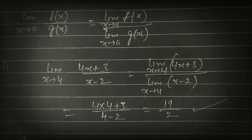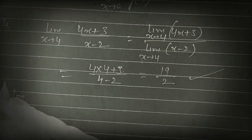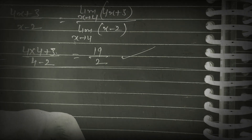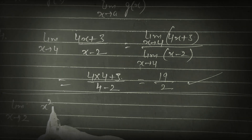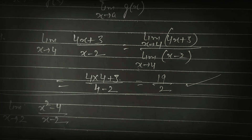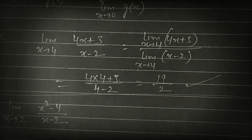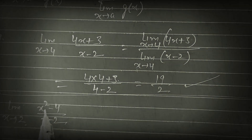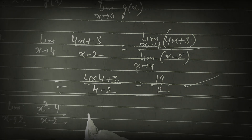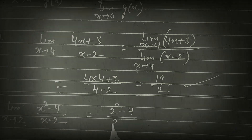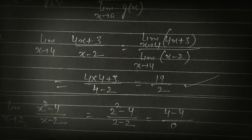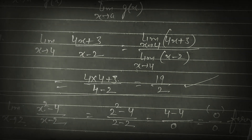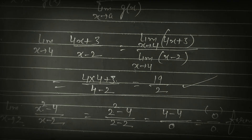One more example: suppose limit x tends to 2 of (x² − 4) upon (x − 2). If we put x = 2 in numerator and denominator: numerator is 2² − 4 = 4 − 4 = 0, denominator is 2 − 2 = 0. So it is 0/0 form, which is called indeterminate form — not defined.